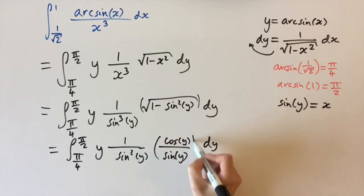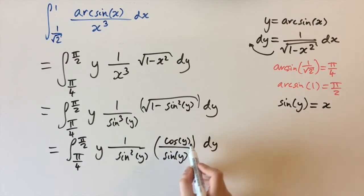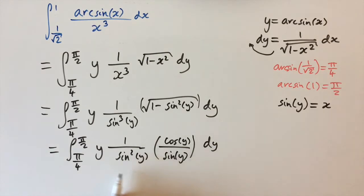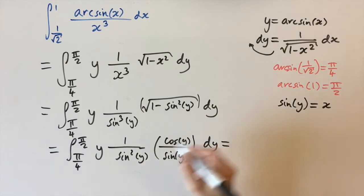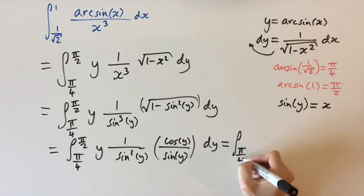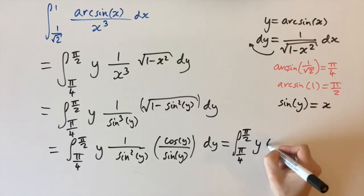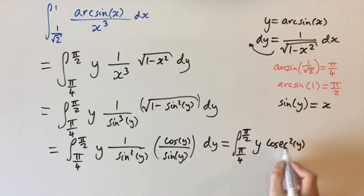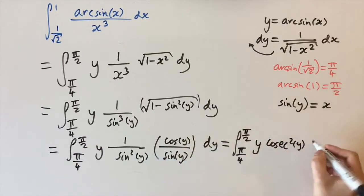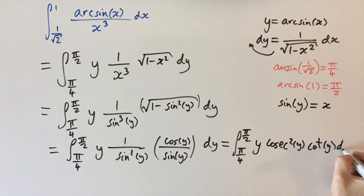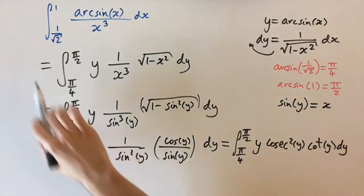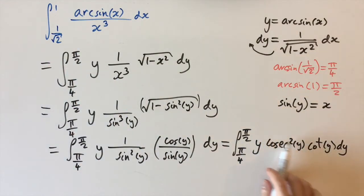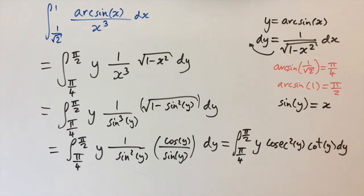Cosine of y divided by sine of y is 1 over tan of y, which is cot of y. And 1 over sine is cosec of y. So we rewrite the integral from pi over 4 to pi over 2 as y times cosec squared of y times cot of y, dy. This form is nicer because we know the derivatives of cosec and cot, which lets us integrate by parts.